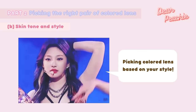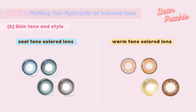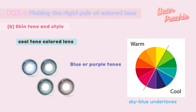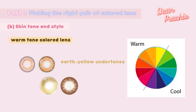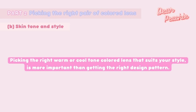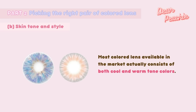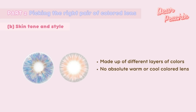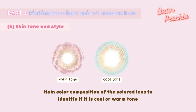Next, we'll discuss how to choose colored lenses based on your style. Colored lenses can be divided into two main types: cool tone and warm tone. Cool tone colored lenses are mostly made up of blue or purple tones, extended from sky blue undertones. Warm tone lenses are extended from earth yellow undertones, and brown tone lenses are also categorized under warm tone. However, most colored lenses on the market consist of both cool and warm tone colors, so there is no absolute warm or cool lens — check the main color composition to identify the dominant tone.